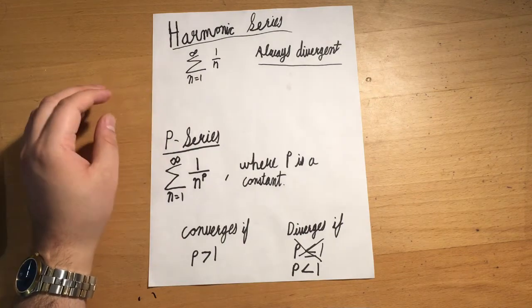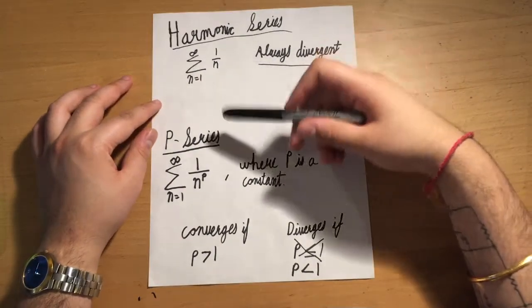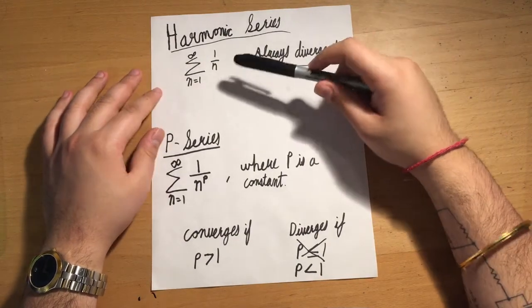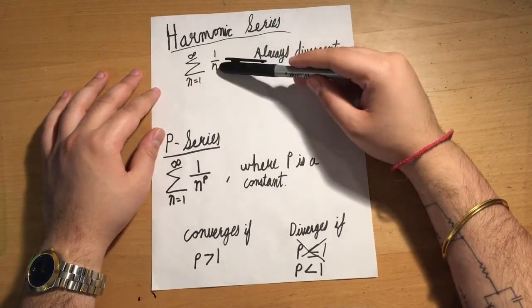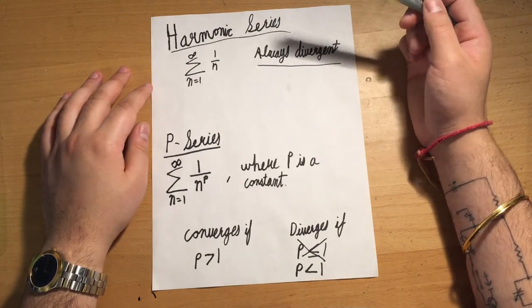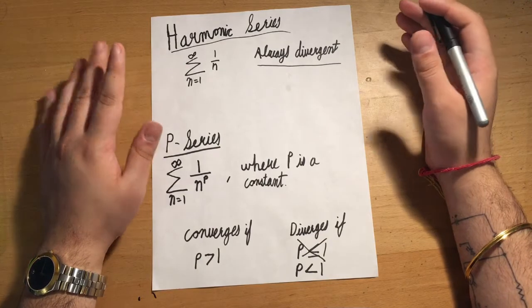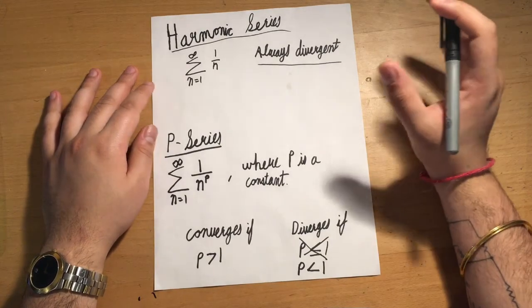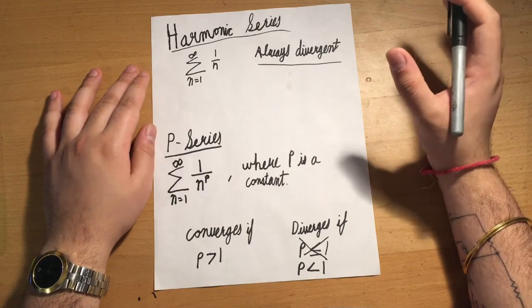Two of the series that are easier to work with are harmonic and p-series. A harmonic series takes the form 1/n, where n is the thing being incremented. Based off just looking at it, it's not immediately apparent, but this series, no matter what, always diverges.